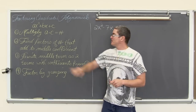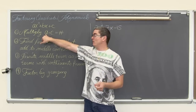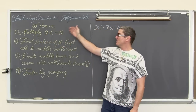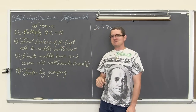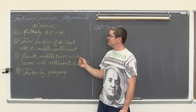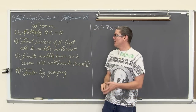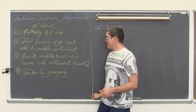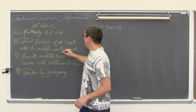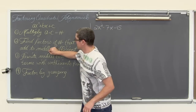We are going to multiply the first value — the leading coefficient — by the constant and just get some number. We are then going to find factors of that number that add to the middle coefficient, that add up to the middle term.